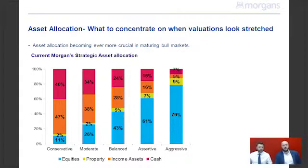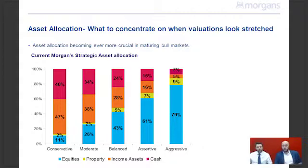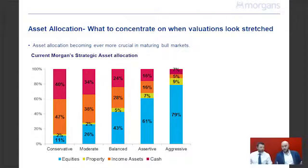This shows the current Morgan strategic asset allocation recommendations from conservative through to aggressive. You should be doing a risk profile and making sure you're on top of your active asset allocation.